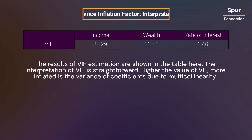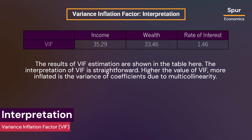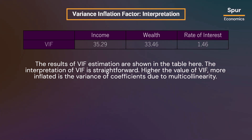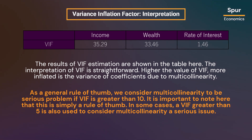The results of VIF estimation are shown in the table here. The interpretation of VIF is straightforward: higher the value of VIF, the more inflated is the variance of coefficients due to multicollinearity. As a general rule of thumb, we consider multicollinearity to be a serious problem if VIF is greater than 10. It is important to note that this is simply a rule of thumb — in some cases, a VIF greater than 5 is also used to consider multicollinearity a serious issue.